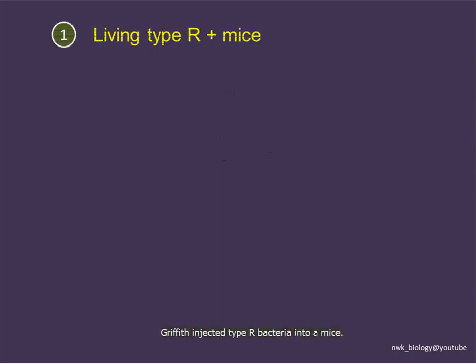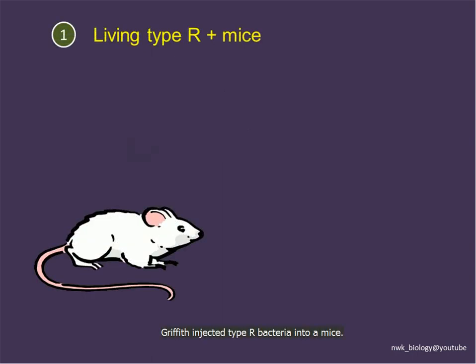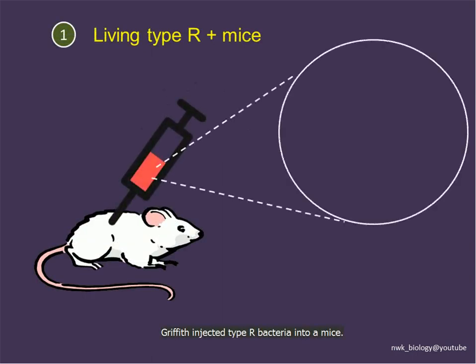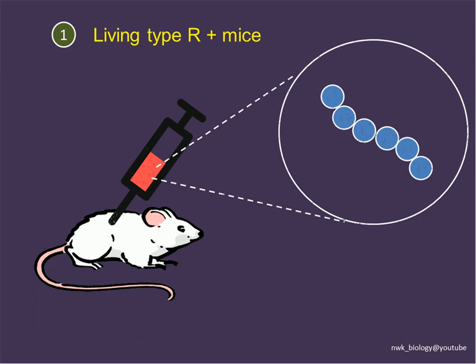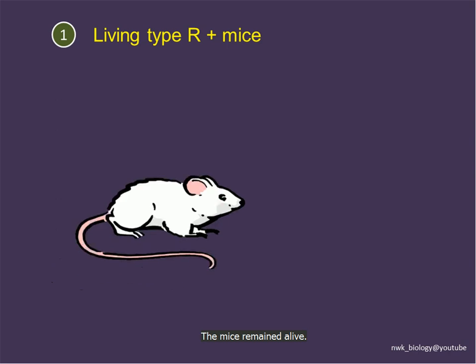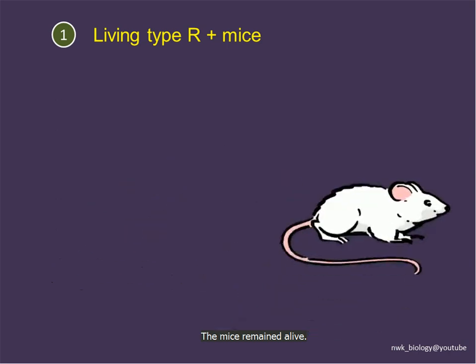In the first experiment, Griffith injected living type R bacteria into the mice. Since type R bacteria do not have a protective capsule, it is non-virulent, and the mice will remain alive.